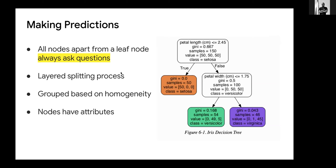For the layered splitting process, the nodes are grouped based on similarity. If the petal length is less than 2.45, it brings all similar values together here; the ones not less than 2.45 go to the other branch. These are what we need to note when making predictions.